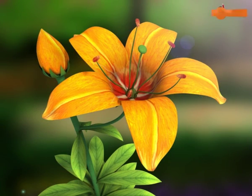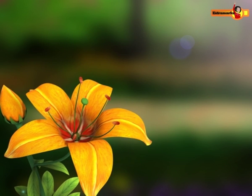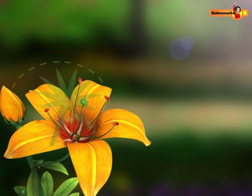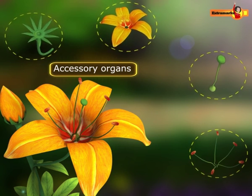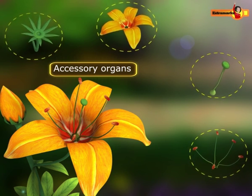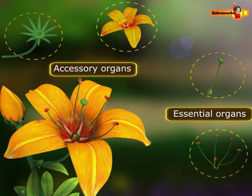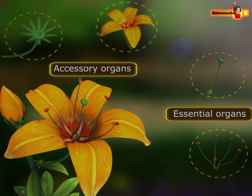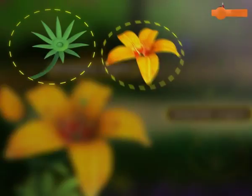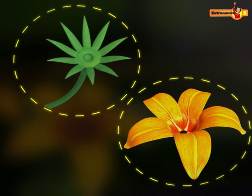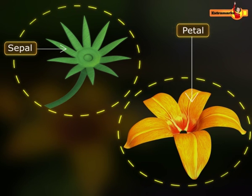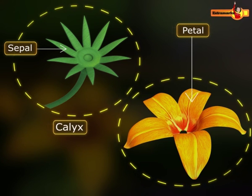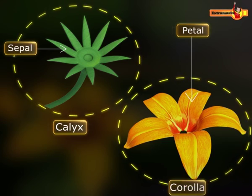A typical flower has four whorls. The outer two whorls consist of accessory organs and the inner two whorls consist of essential organs. The accessory organs consist of sepals and petals, also known as calyx and corolla respectively.